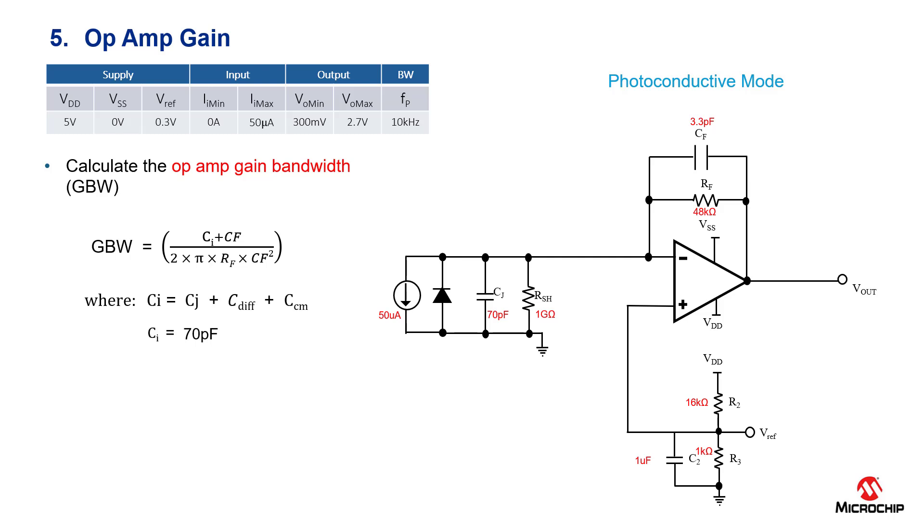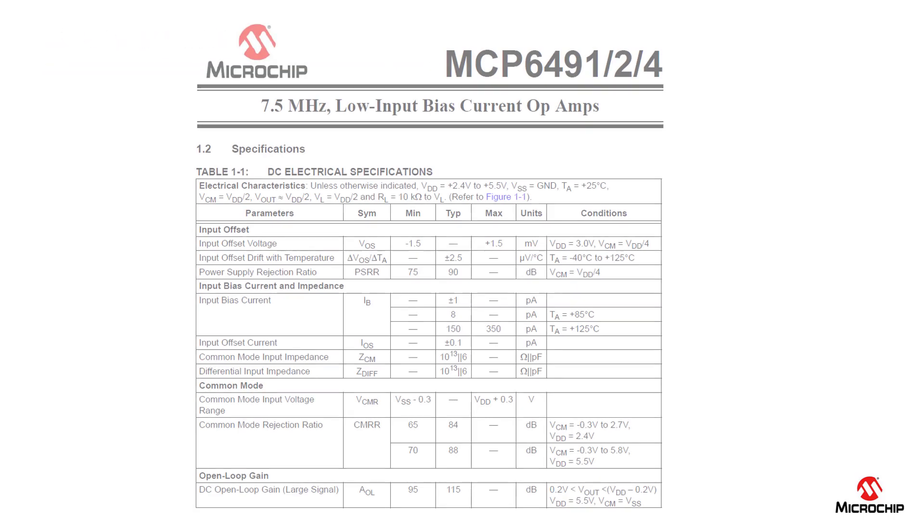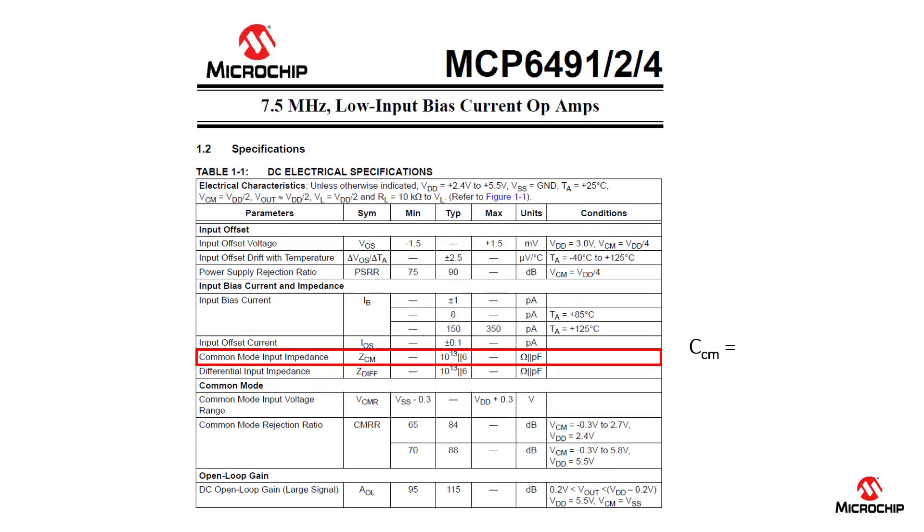Ci is the sum of the photodiode junction capacitance, CJ, which is 70 picofarads, the differential input capacitance, CD, and the common mode input capacitance, CCM. These last two are the amplifier's differential and common mode values, and we can get them from the datasheet.